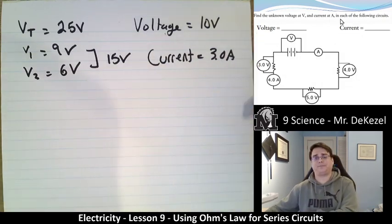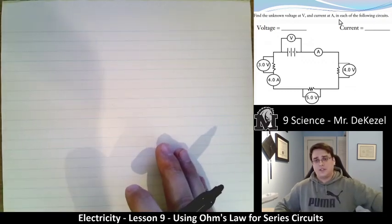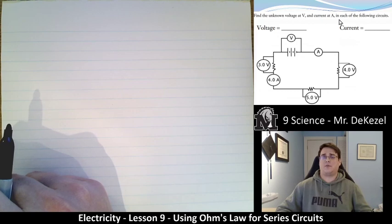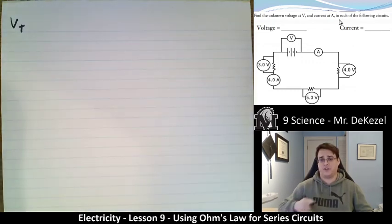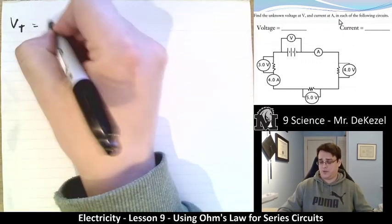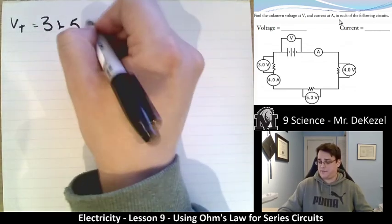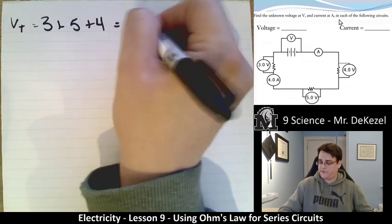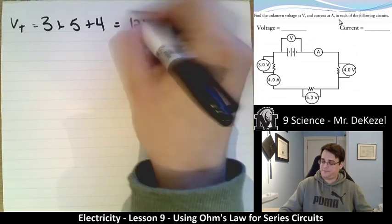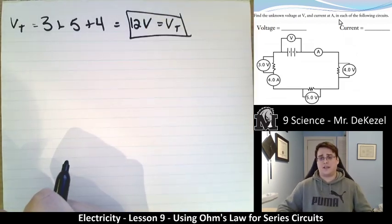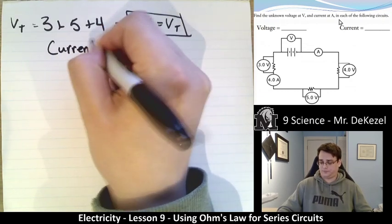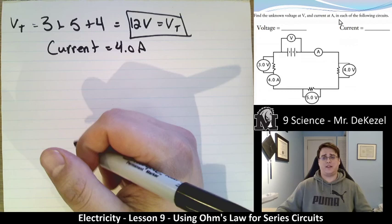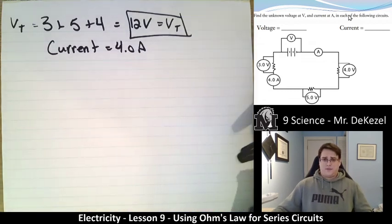In the next problem, we have the voltages across each resistor and we're looking for the total battery voltage. The total voltage equals the sum of all individual voltages: 3 + 5 + 4 = 12 volts. So that is a 12-volt battery. The current is also given — it's 4 amps. The current is the same throughout a series circuit.